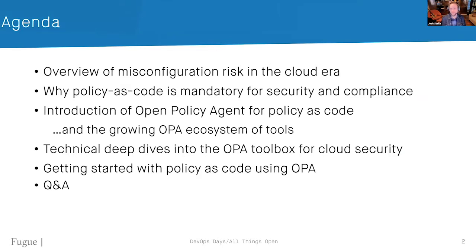I'm also going to spend some time showing you around the OPA ecosystem and showing you code. If you're not a coder, stick around because I will explain it in great detail so you can follow along. We'll go through an overview of misconfiguration risk — what I'm going to show you around OPA is focused on getting cloud security right, and that's almost all misconfiguration. We at Fugue believe that policy as code is mandatory for automating security and compliance in the cloud.